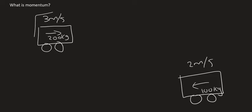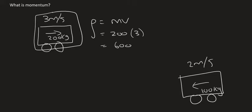So here, with the object on the top, we could say that its momentum is equal to mass times velocity, which would be equal to 200 multiplied by its velocity, which is 3. And that's going to give us 600 kilograms meter per second, and then always give a direction.